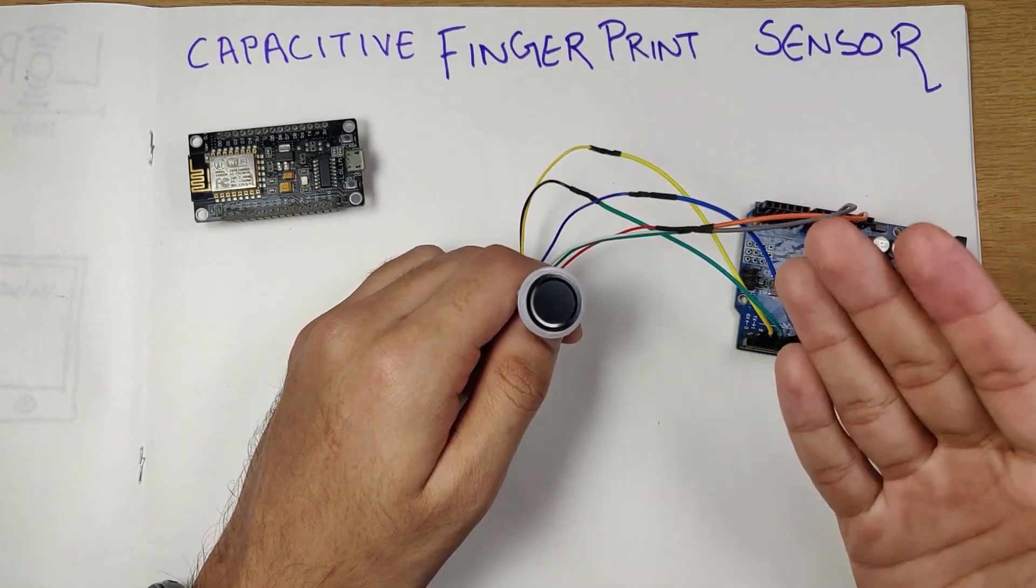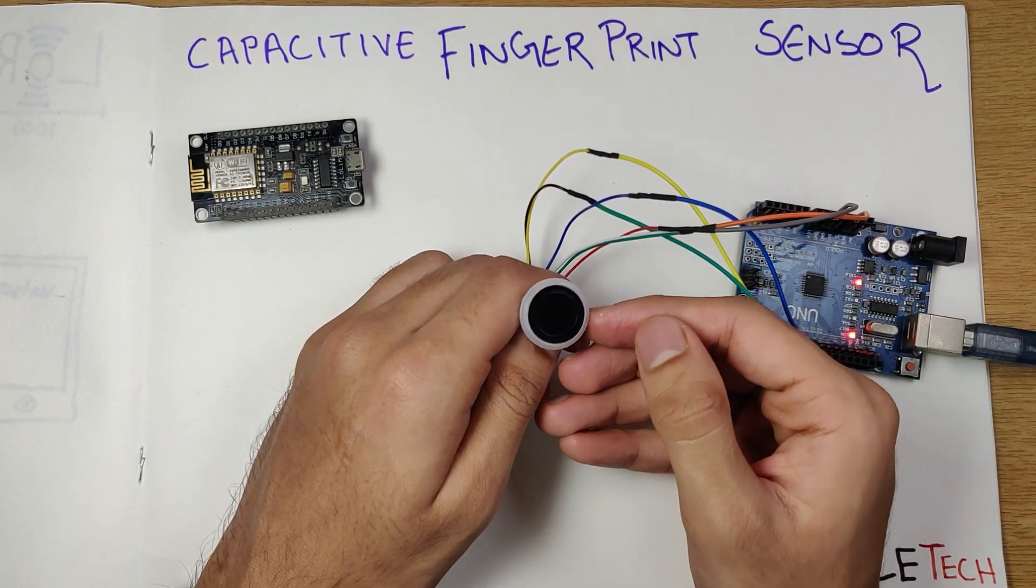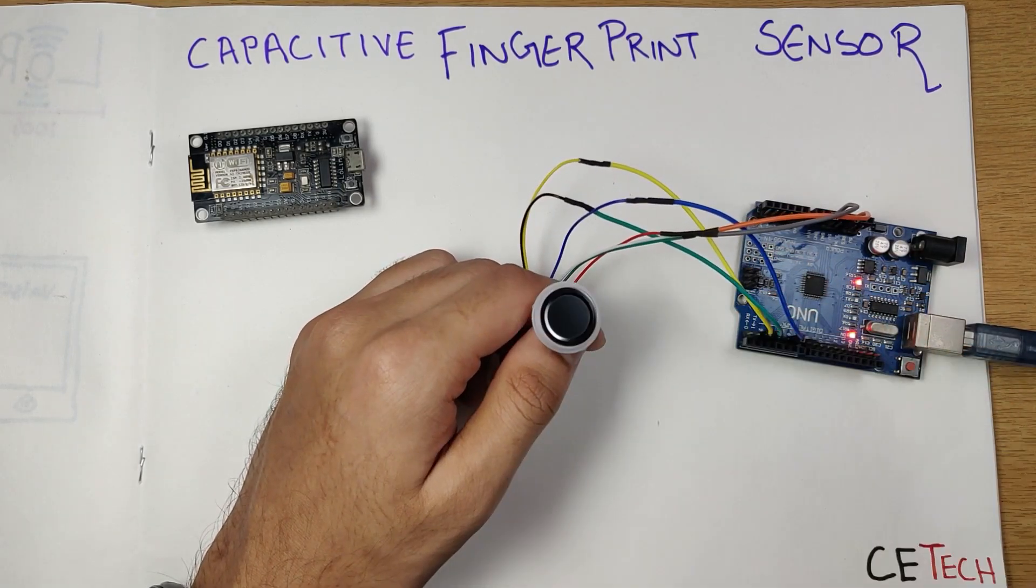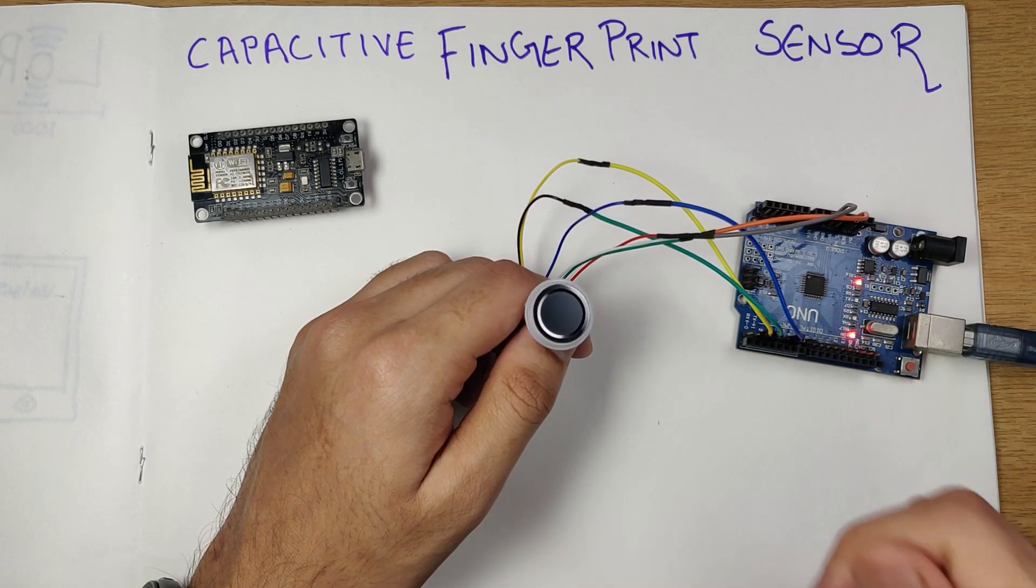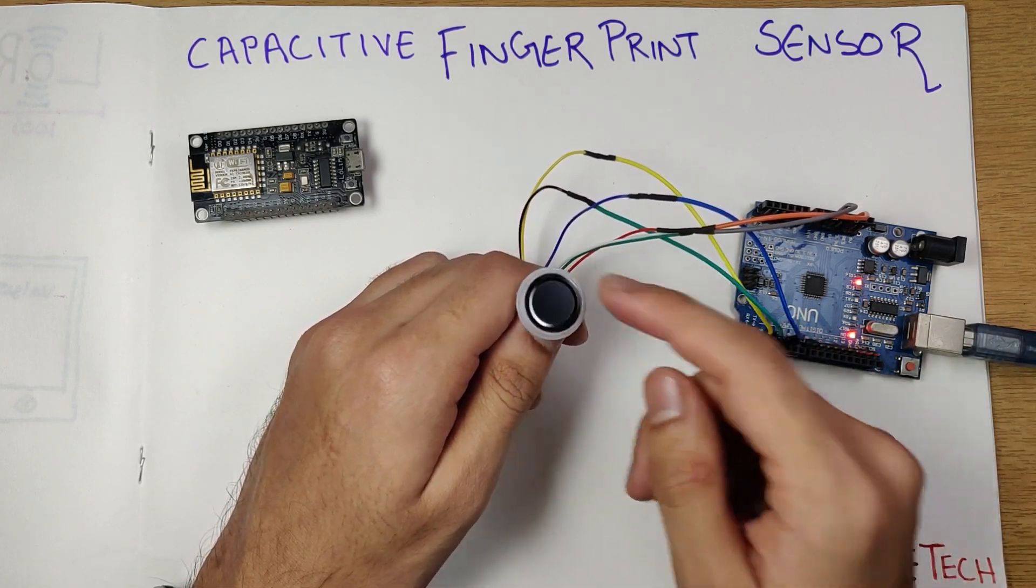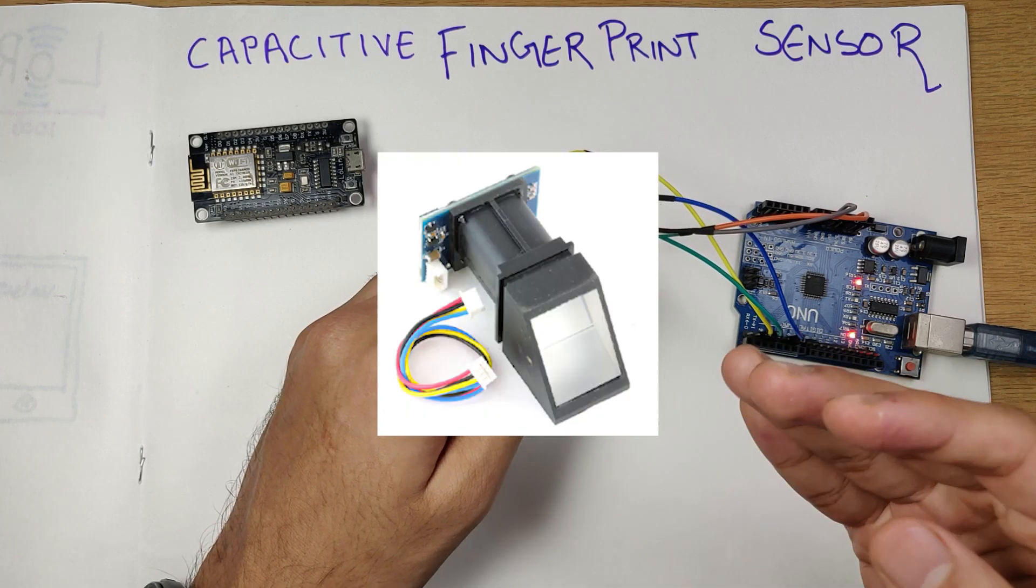You might have any project in mind or in your list wherein you might require to secure it, may be it a door lock or be it an access system wherein you need a fingerprint sensor.